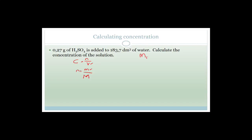To find the molar mass of H₂SO₄: hydrogen has a molar mass of 1, so 2 × 1 = 2; sulfur is 32; oxygen is 16, so 4 × 16 = 64. That gives 2 + 32 + 64 = 98 grams per mole. That is the molar mass of sulfuric acid.